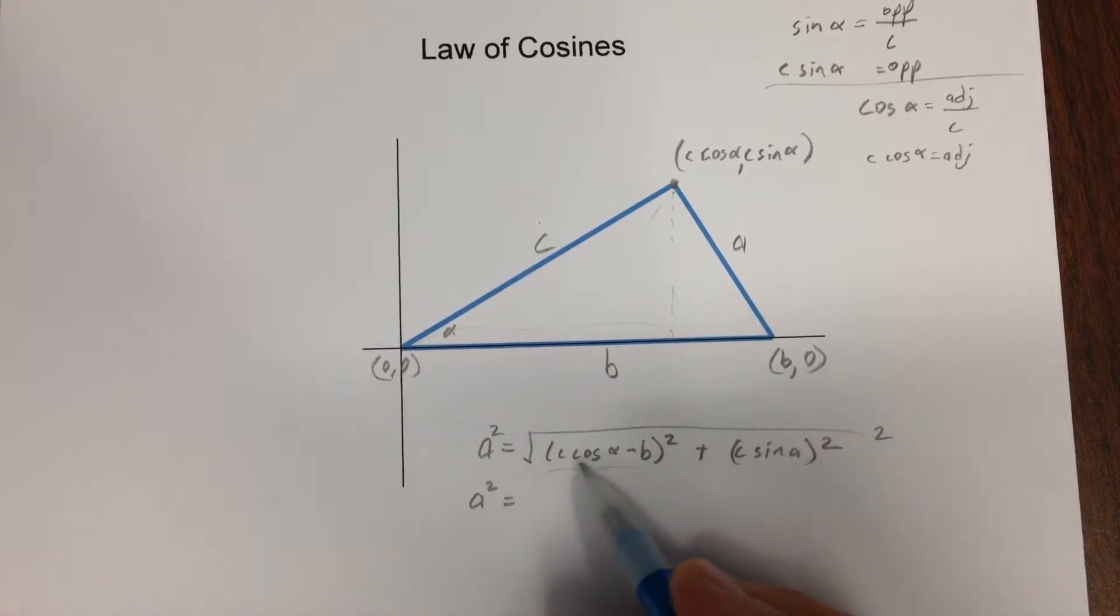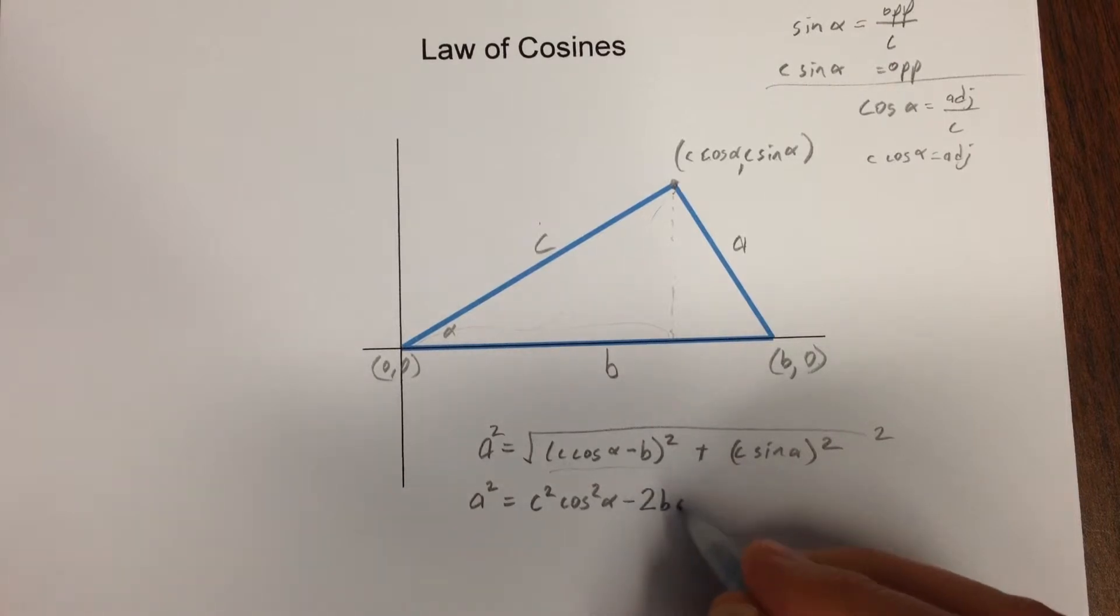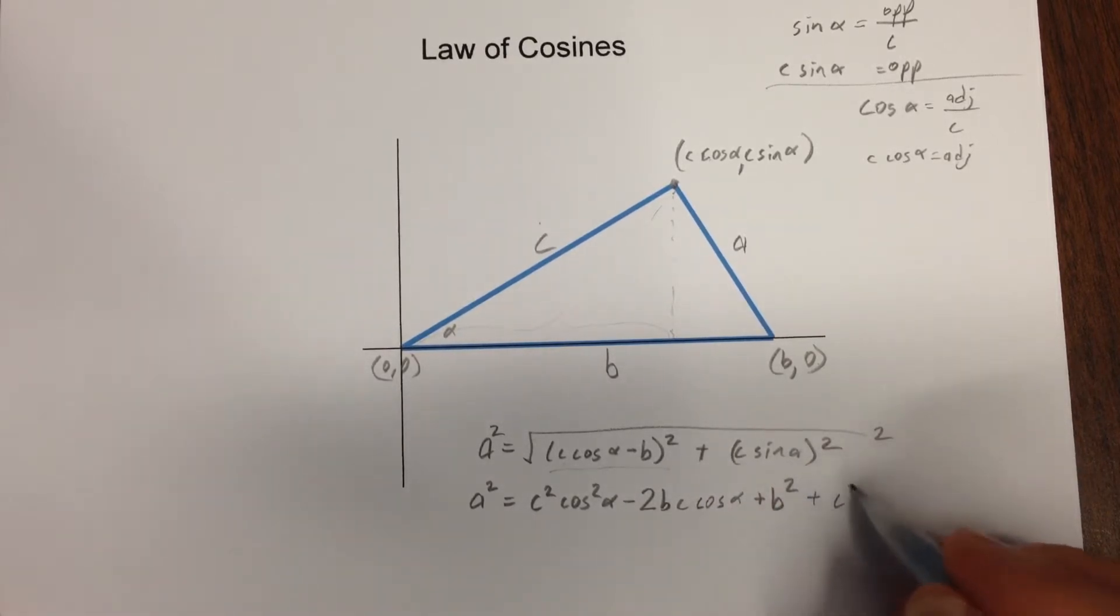I'm going to square that entire binomial. That means the first times the first here, it's going to get me C squared cosine squared alpha. Then the first term times the second, if I'm distributing that, I'll end up actually getting two of those. That's 2BC cosine alpha. And then I get a negative B times negative B, which is B squared. Now the second piece gives me C squared sine squared alpha.